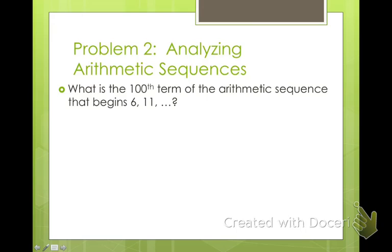Alright, what is the 100th term of the arithmetic sequence that begins 6, 11? So they're telling you specifically that this sequence is 6, 11, and it is arithmetic. So that means we're going to be adding the same amount each time. So let's ask ourselves, what is our common difference? Well, what's the difference between 6 and 11? It's 5.